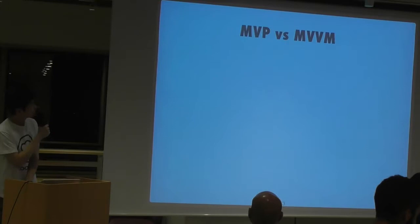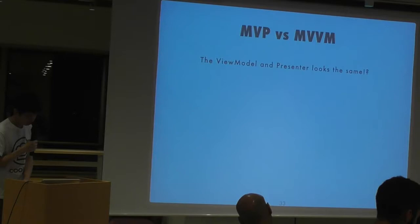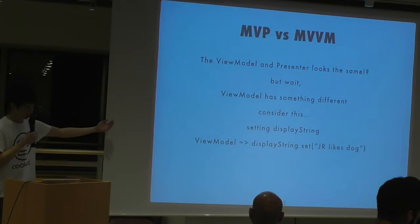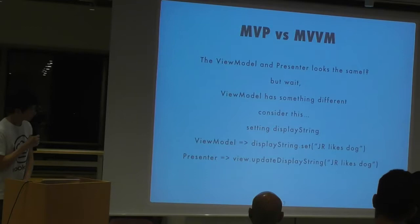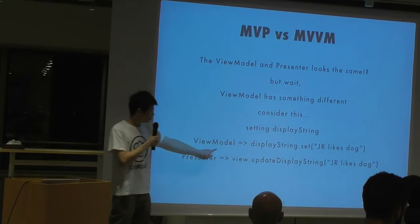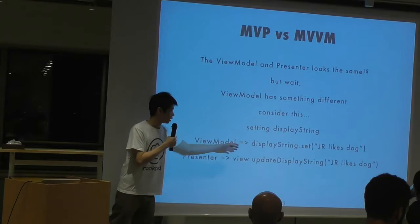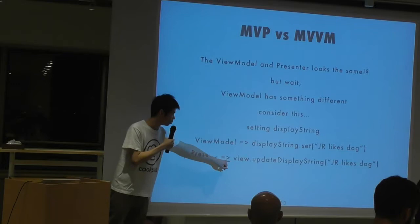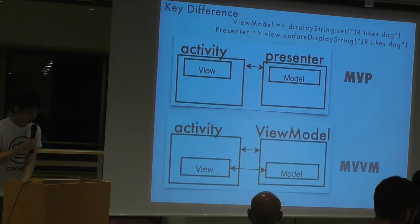MVVM versus MVP — they look really similar. But the view model has something different. Consider in my previous example, setting up a string like 'JR likes dog and cat.' In the MVVM case, I set the display string directly and it automatically gets reflected on the view because they are bound together by a library. In the MVP case, we are delegating the responsibility to the view itself — that's the key difference.